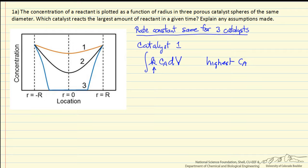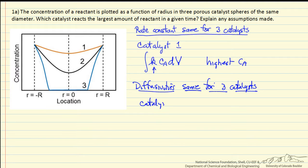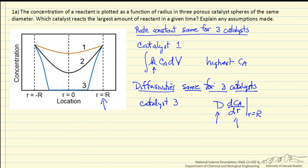The other extreme would be to assume that the diffusivities are the same for each of the catalysts. This means the rate constants are different, and now the catalyst with the highest rate is going to be catalyst 3, because the gradient — diffusivity times the change in concentration of A with respect to radius — evaluated at the external surface tells us how much is diffusing into the catalyst, because whatever diffuses in reacts. If the diffusivity is the same, then the one with the largest gradient, which is catalyst 3, has the largest gradient here, and therefore the most is diffusing in. So this would say K3 is larger than K2, larger than K1, and therefore the most that reacts is in catalyst 3.